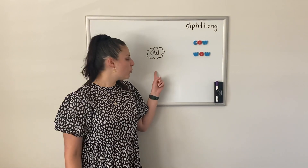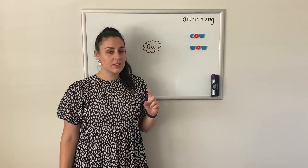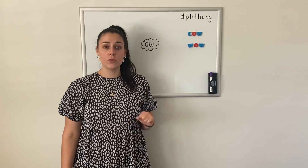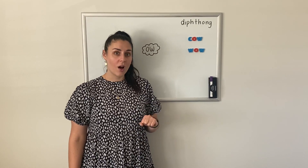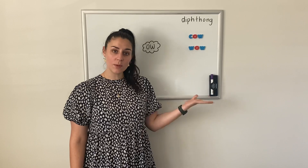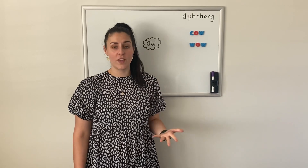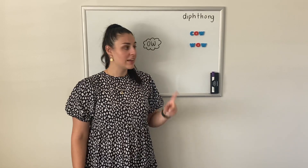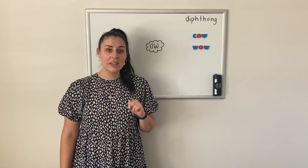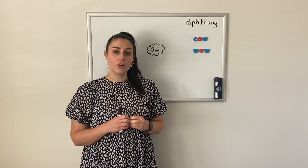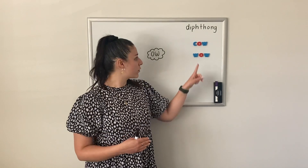But here we have OW, and that doesn't sound like our normal vowel sounds. And so that is why it's called a diphthong, because it is making a new vowel sound. Now, usually when we have OW as a phoneme, you can find that at the end of words.